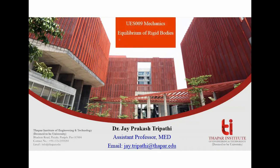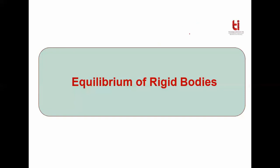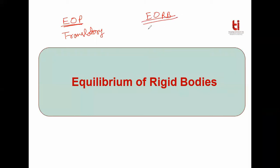The topic name is equilibrium of rigid body. How is this topic different from the previous topic? The main difference is because of the nature of motion. If you consider equilibrium of points, the nature of motion will be translatory only. But if you consider equilibrium of rigid body, then we consider two types of forces: forces that can produce translatory motion, plus forces that can produce rotary motion.